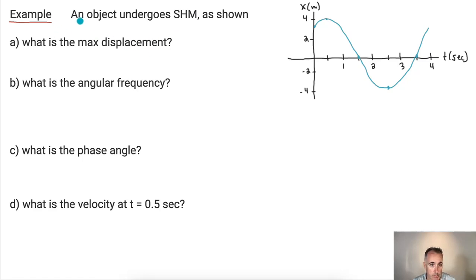Let's do an example. So we have an object undergoing SHM, simple harmonic motion, shown like this. By the way, it might actually help to notice, look, it didn't start off at zero, did it? That actually might be nice to know about, so we're going to have to figure that out.